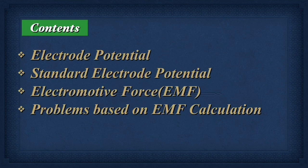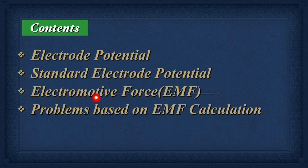After that, we will learn about the standard electrode potential — what conditions are required to set the standard electrode potential. After that, we will learn about the electromotive force. We already talked about the EMF in the construction and working of the galvanic cell, but here we will discuss in detail what is exactly the electromotive force depending upon the standard electrode potential. At the end of this chapter, we will talk on the EMF calculation — how to calculate the EMF of the cell using the electrode potential.